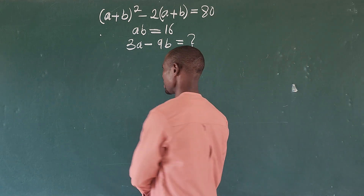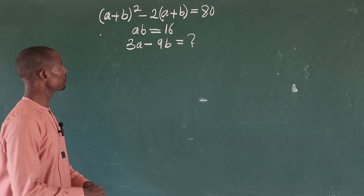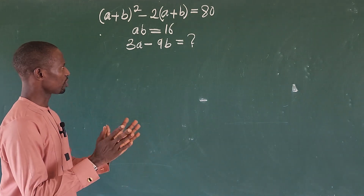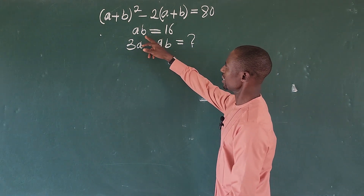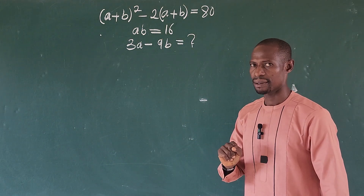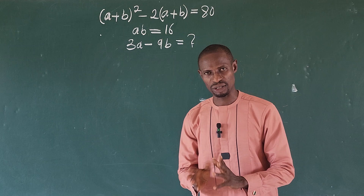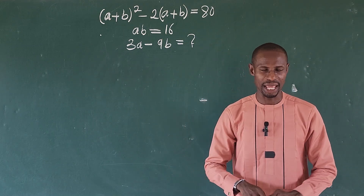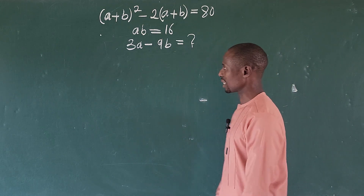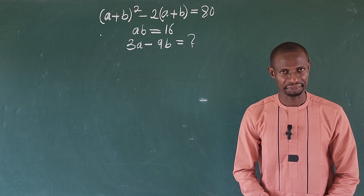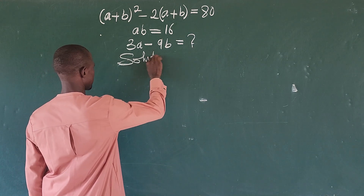Hi everyone, welcome to today's class. Look at this question: (a + b)² minus 2(a + b) equals 80. We are also given that a times b equals 16. We need to find the value of 3a minus 9b. This question requires us to solve for a and b, then substitute them into 3a minus 9b. Let's go into today's challenge.